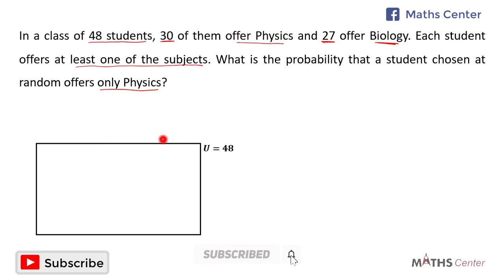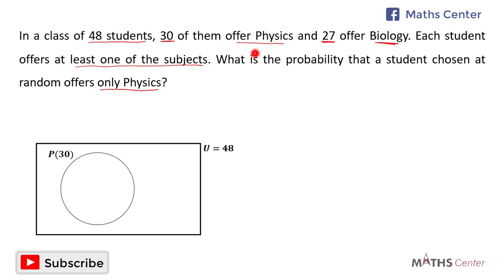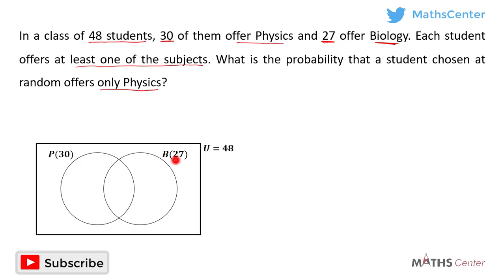We have a rectangle here to show the number of students in the class — that is the universal set. So u is equal to 48, which is the number of students in the class. From the question, 30 of them offer physics, so we use one circle to represent those who offer physics, and 27 offer biology, represented by another circle.